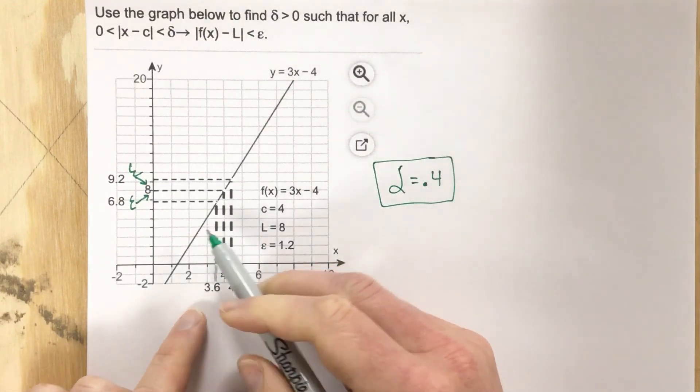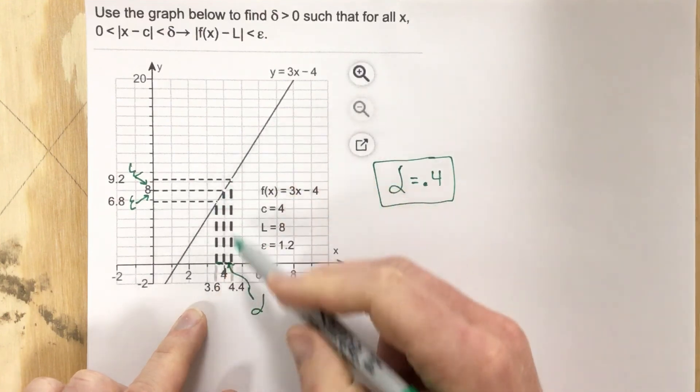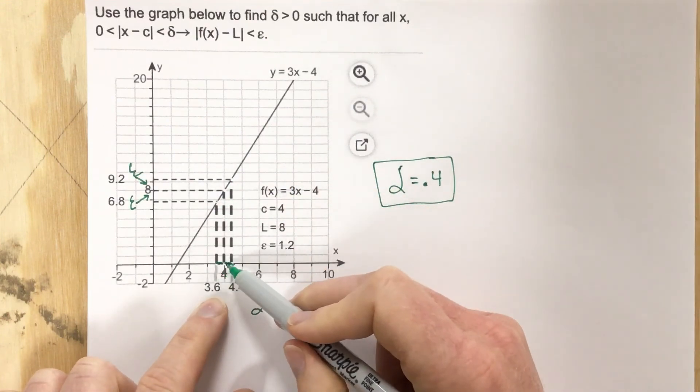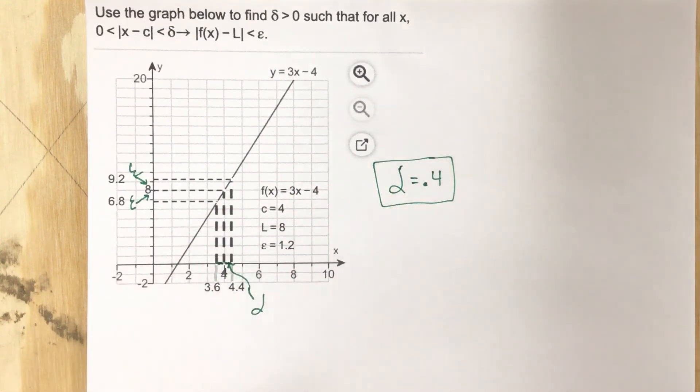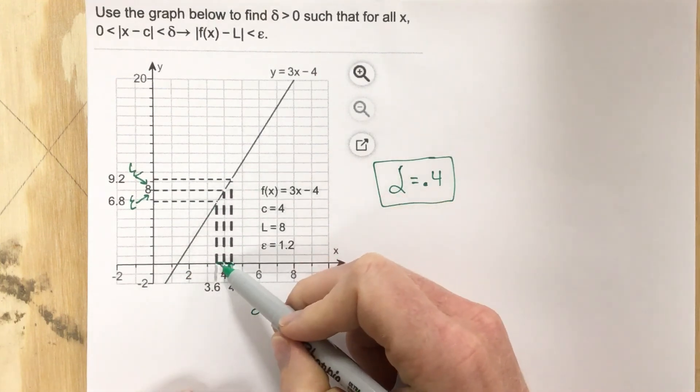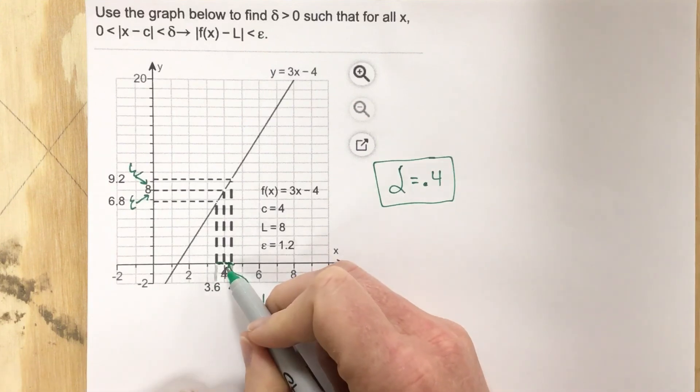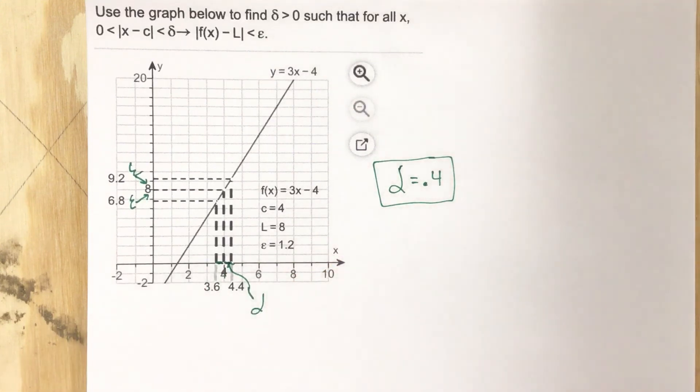For a linear function, notice this is a straight line. The delta values are going to be the same each time because it goes up at the same rate. But if it's a curved line, those delta values could be different. If they're different, we always want to go with the smallest delta value.